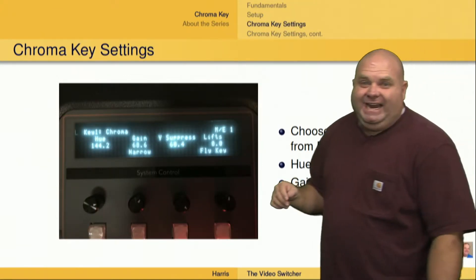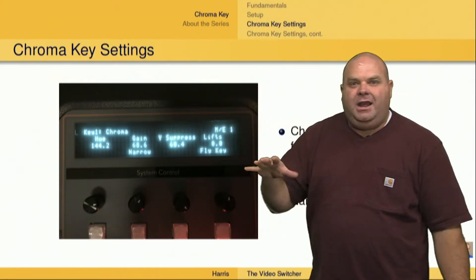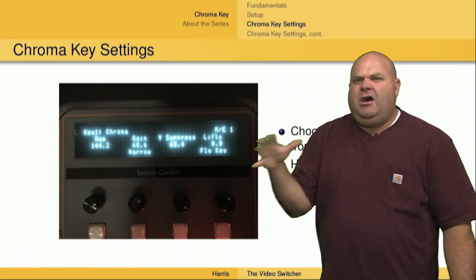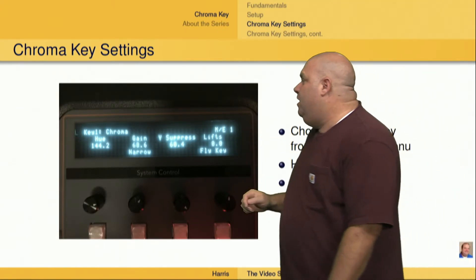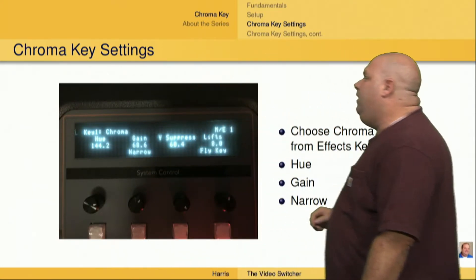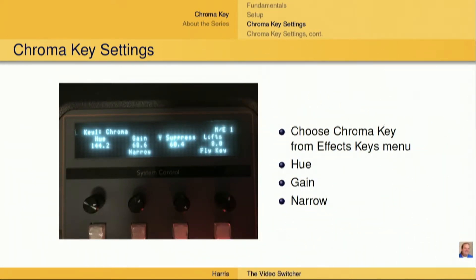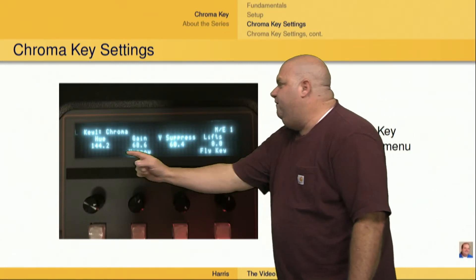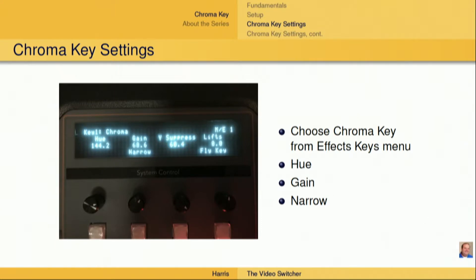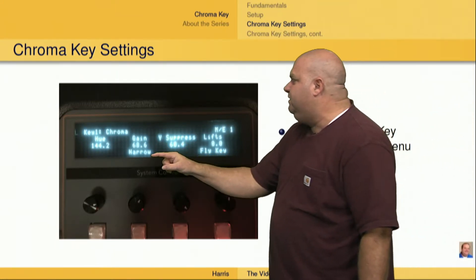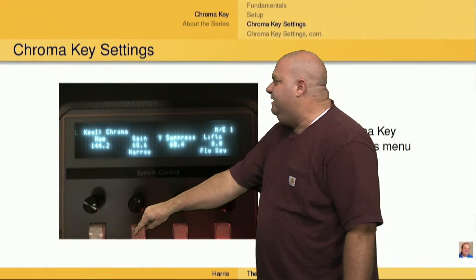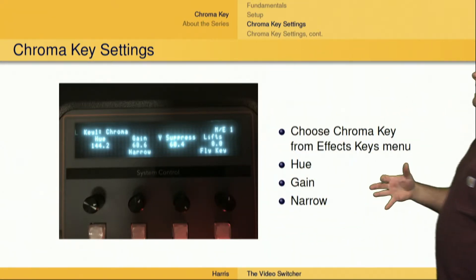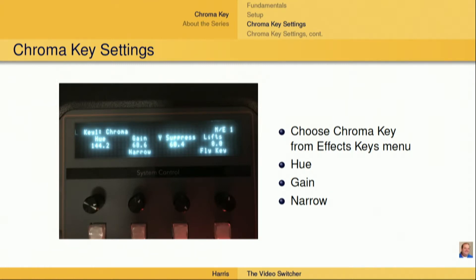We also have our chroma key settings, where we define what color is going to be keyed out and how much of that color is going to be keyed out. We have a number of different settings. We've got the hue, which is the color we want to key out — in this case I'm using a green screen, so the hue value is 144.2. We also have the ability to narrow the range of colors with the narrow button, which is a soft key, and selecting that would narrow the range of hue colors that get keyed out.